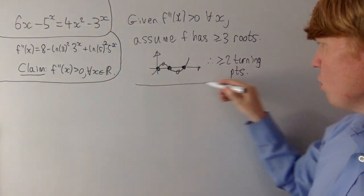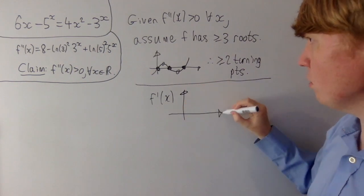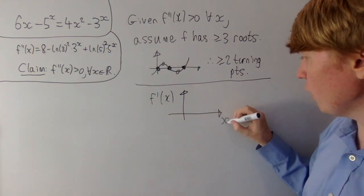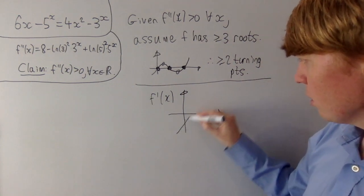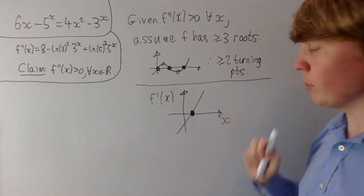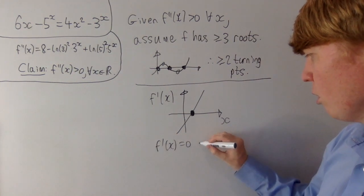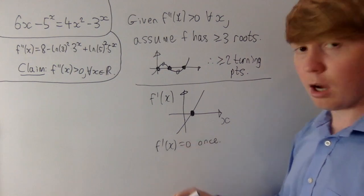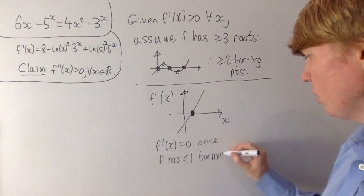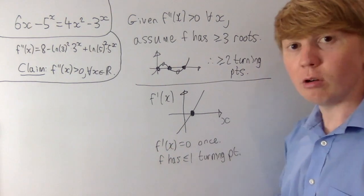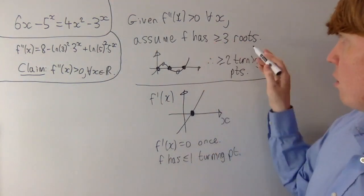So if we've got at least two turning points, let's look at the graph of the first derivative, knowing that the second derivative is always positive. If we draw a graph of the first derivative, it's an increasing function because its derivative — the second derivative — is always positive. So the first derivative can have at most one zero. This means f'(x) equals zero at most once, so our original function f has at most one turning point. But this is a contradiction, because we just saw we need at least two turning points if we have at least three roots.